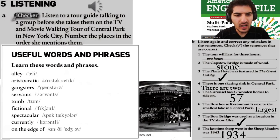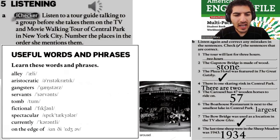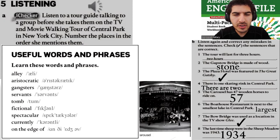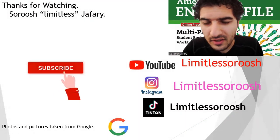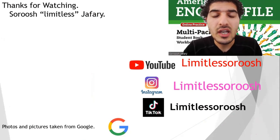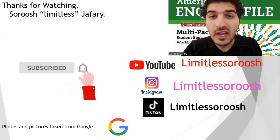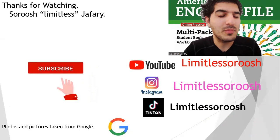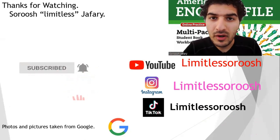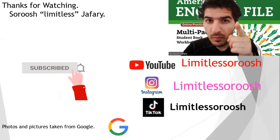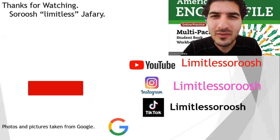Here are some useful vocabulary words for you: ally, aristocratic, gangsters, servants, tomb — note the B is silent — fictional, spectacular, currently, on the edge. Write sentences for each of these words and phrases. And another practice done — every day's work, practice on a daily basis. If I help you, if I make your English better, make sure to like and subscribe. Remember: you can make a difference — I believe in you, but do you believe in yourself? That's all there is to it for today. Bye bye!